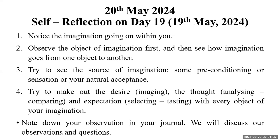We have been discussing the activities of the self, and primarily so far we discussed the activities of block B2 — the dimension of imagination. We have been trying to make out the object of imagination and develop our awareness about it. Once the object of imagination is clear, we can see with that object what my desire is, what my thought is, what my expectation is. And then I can also see the source of my imagination — is it some preconditioning, sensation, or natural acceptance? This is something we will be doing in detail in exercise 1. We have started this observation now.